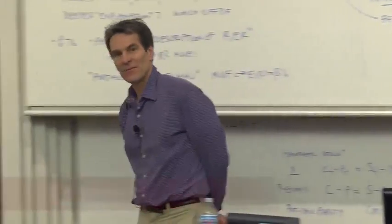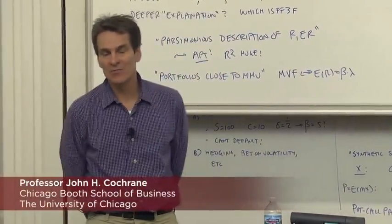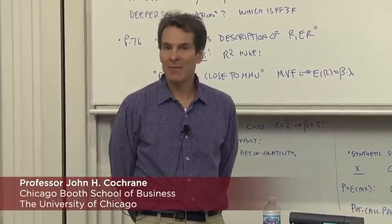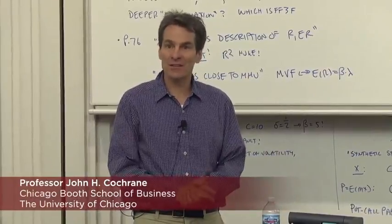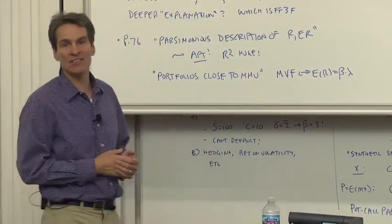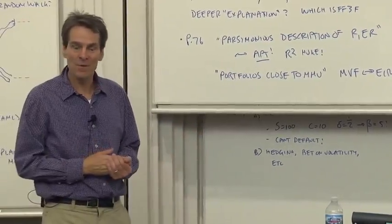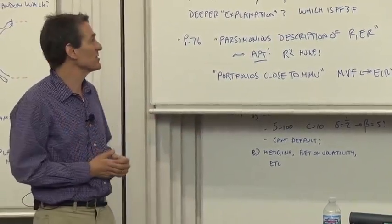So what is the Fama-French three-factor model and its descendants, really? We spent a lot of time deriving factor models and ICAPM and APT and all this stuff. You didn't see any of those assumptions show up. What is really the nature of this model?